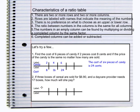The next example says, if three boxes of cereal are sold for $6.90 and a daycare provider needs 17 boxes, how much will she pay? So again, I'm going to label my columns number of boxes compared to the cost. So this tells me three boxes cost $6.90.